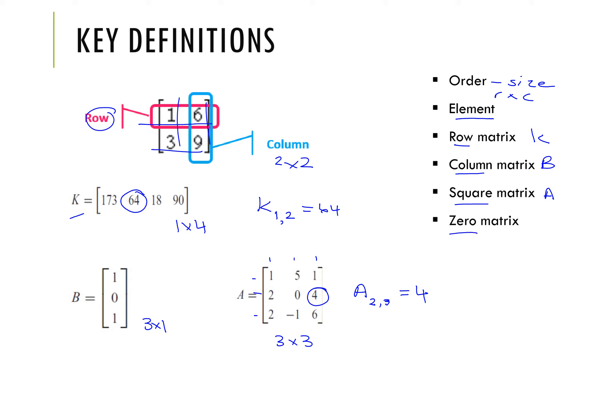A zero matrix is a matrix of any size where all of the elements — all of the values inside — are zeros. When adding or subtracting with a zero matrix, it's the same as in normal arithmetic with integers: it's the same as adding or subtracting with the number zero.